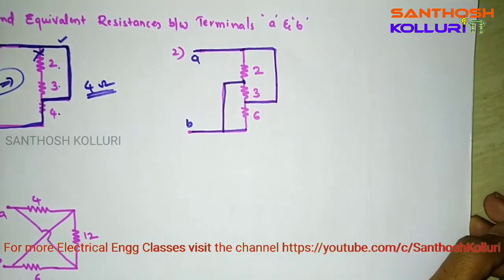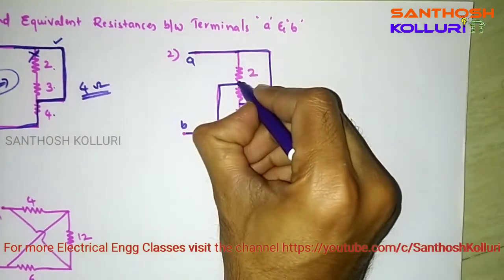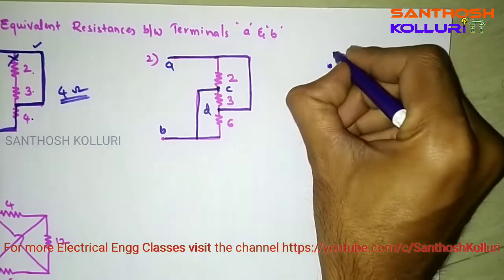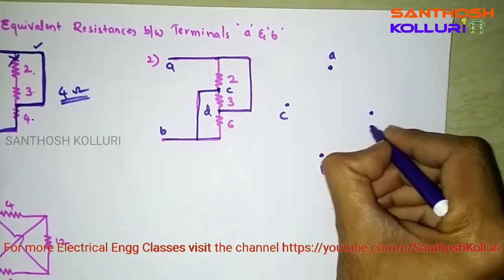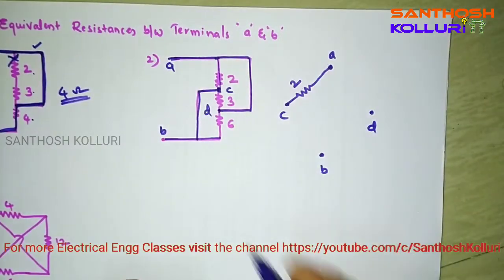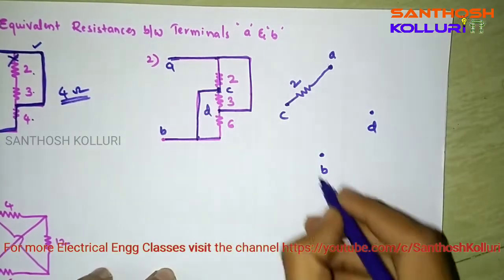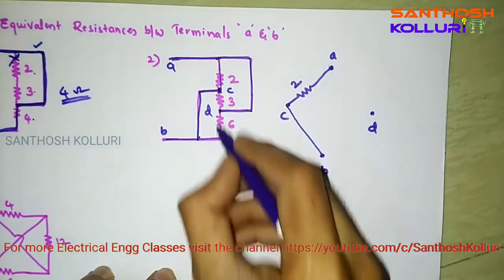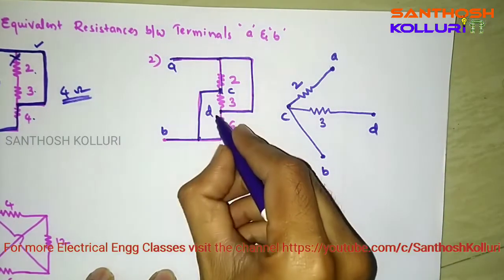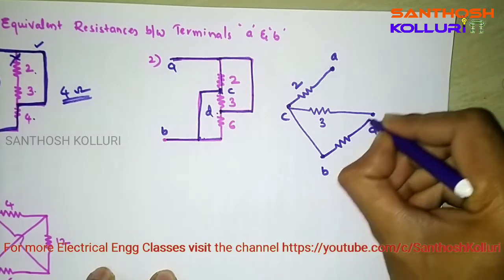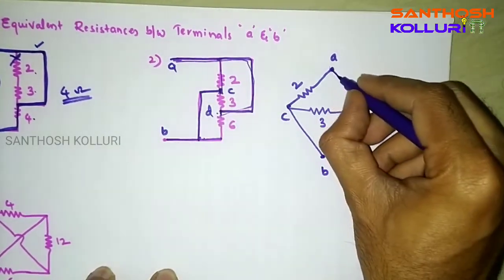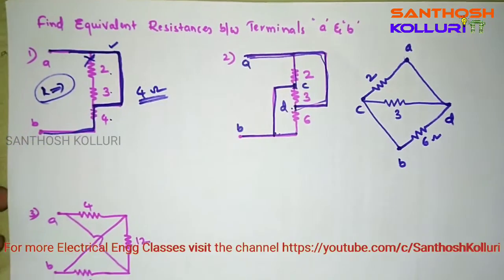To solve this type of problem, we identify the short circuit points and redraw the circuit. Between K and C we have a 2 ohm resistor. From C to B there is a short circuit connection. From C to D we have a 3 ohm resistor. From D to B it is 6 ohms. And from A to D we have a short circuit path. This is the new redrawn diagram.